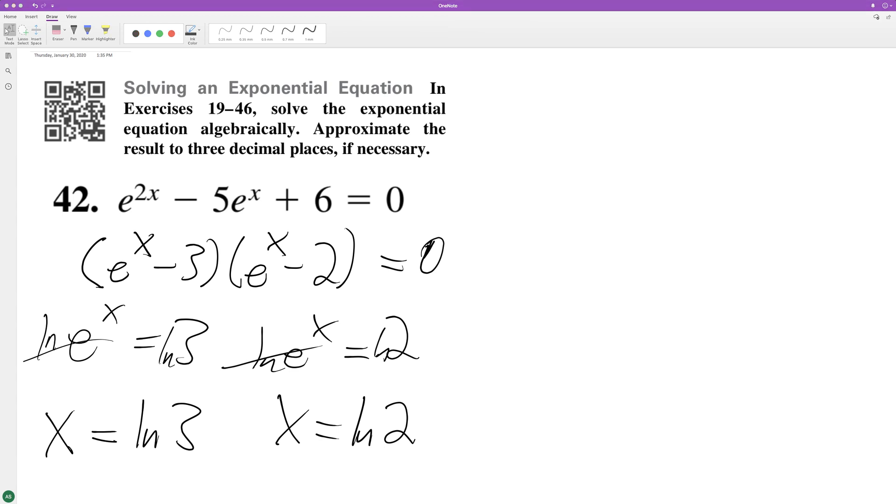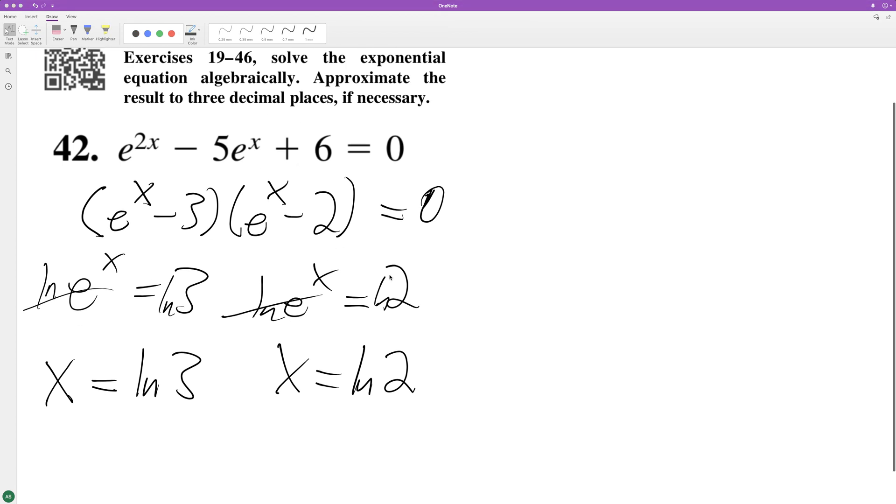If we punch these into our calculator to get it to three decimal places, for natural log of 3 we get x equals approximately 1.099.